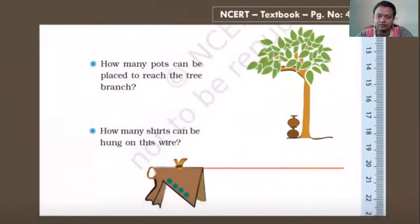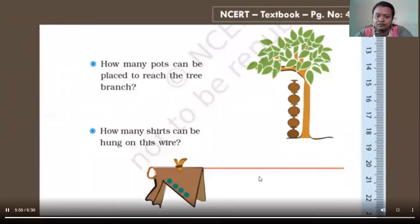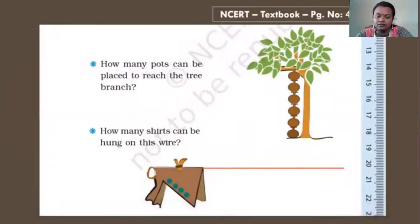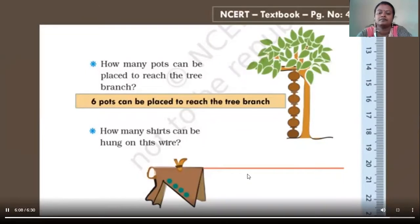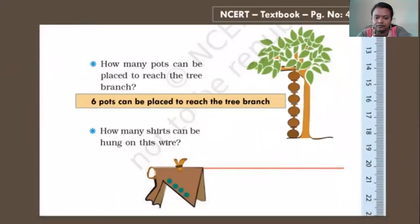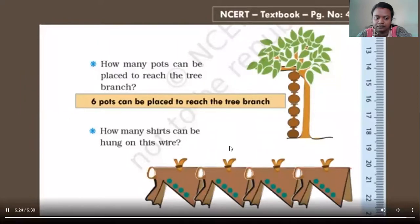Let us look at the next example: how many cups can be placed to reach the tree branch? We are going to place the cups one upon another and calculate the length of the tree till the branch. We could see 6 pots can be placed to reach the tree branch. Similarly, in the next example: how many shirts can be hung on this wire? We could see that 4 shirts can be hung on this given length of wire.